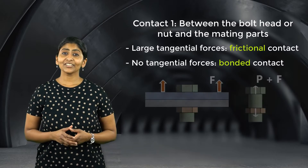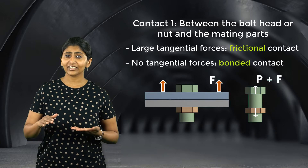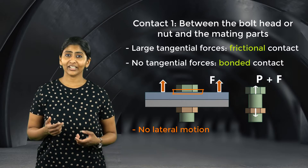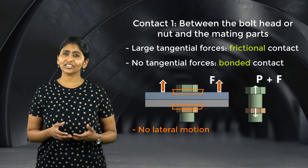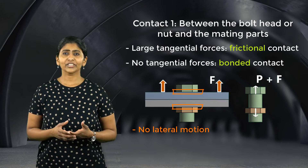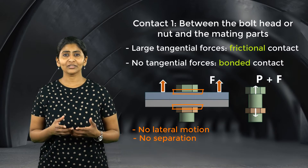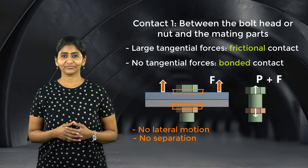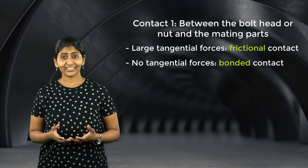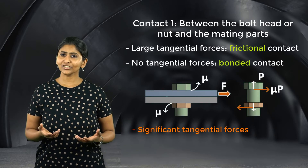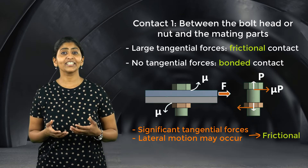For example, in case of a tension joint, the forces act along the bolt axis and there is no significant lateral motion between the bolt head and the mating components or between the nut and the mating components. Thus, tangential forces are not very significant. Also, if the bolt has been tightened sufficiently, we do not expect separation to occur between the bolt head, the mating component and the nut. In such a case, bonded contact can be used. On the other hand, in case of a shear joint, tangential forces are very important. Hence, we use frictional contact between all three contact pairs.